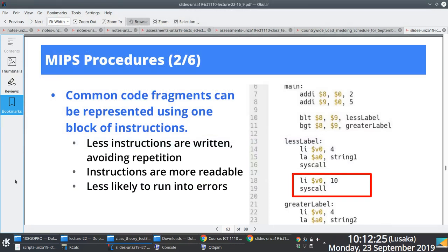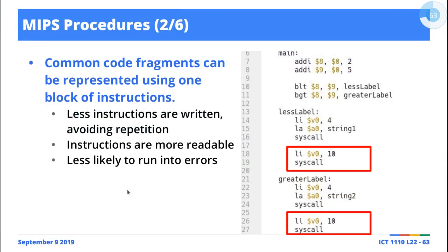The interesting thing about procedures or functions is that for the most part, you rarely need to know the gory details of how that particular function was implemented. The only information you need is: what is the name of the function, how do I use the function, and what do I get back when I call it. For the square root function, I know the name is SQRT, it takes one parameter — the number whose square root I want to compute — and I don't care how it was implemented or whether it's 1,000 lines of code.